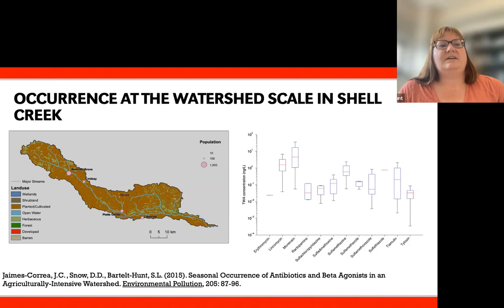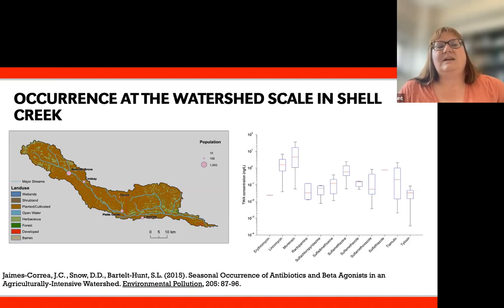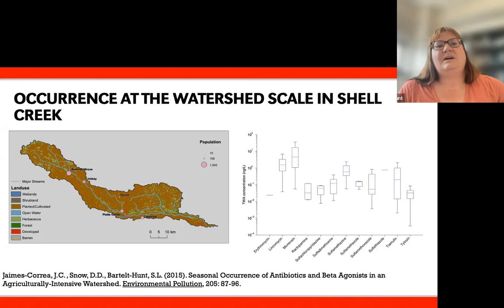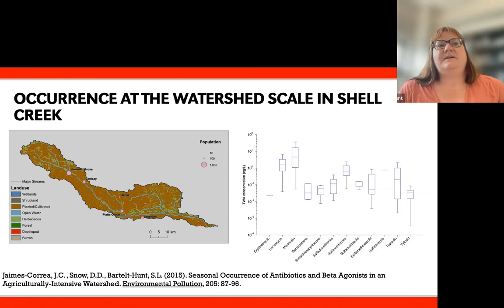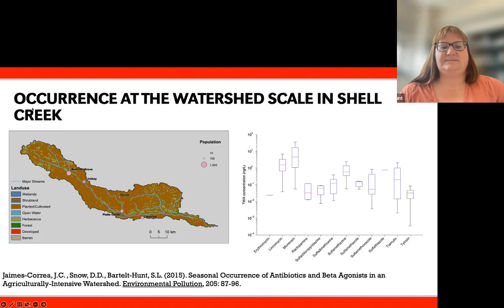We commonly detect compounds such as lincomycin and monensin, as well as sulfa antibiotics in Nebraska watersheds. The box and whisker plots represent the range of concentrations observed, and we see a fair amount of variability in concentrations over the course of a monitoring season.